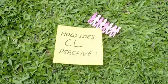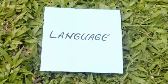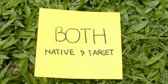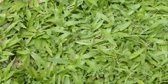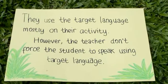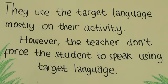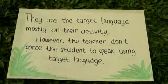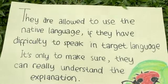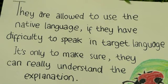How does cooperative learning perceive? First, language. They use the native language and also the target language. The teacher does not force the students to speak using the target language. They are allowed to use the native language if they have difficulty, just to make sure they can really understand the explanation.